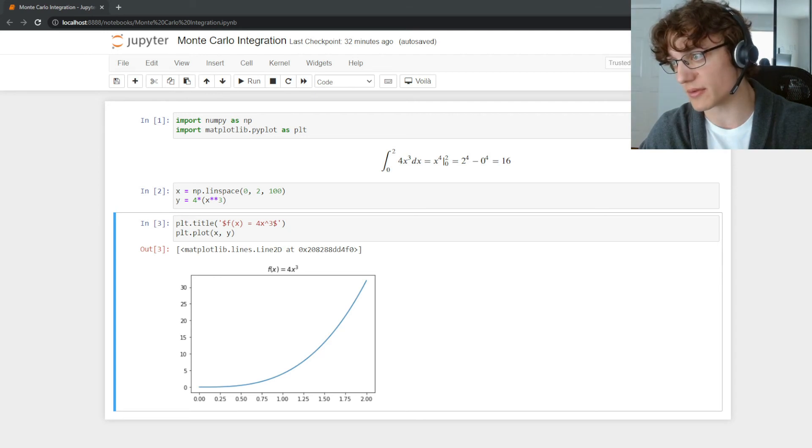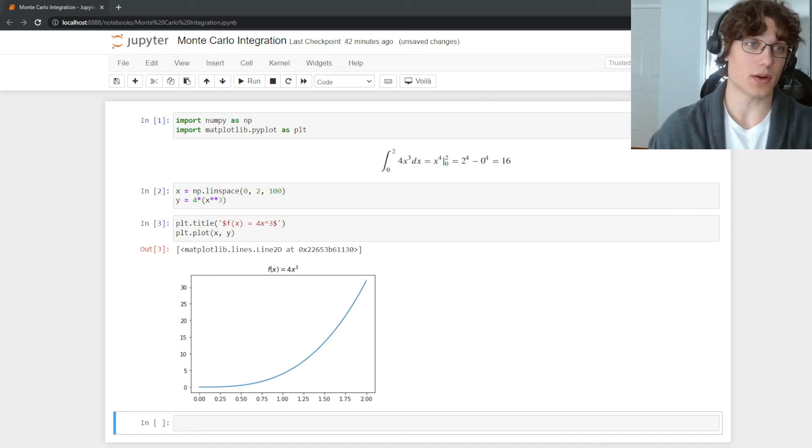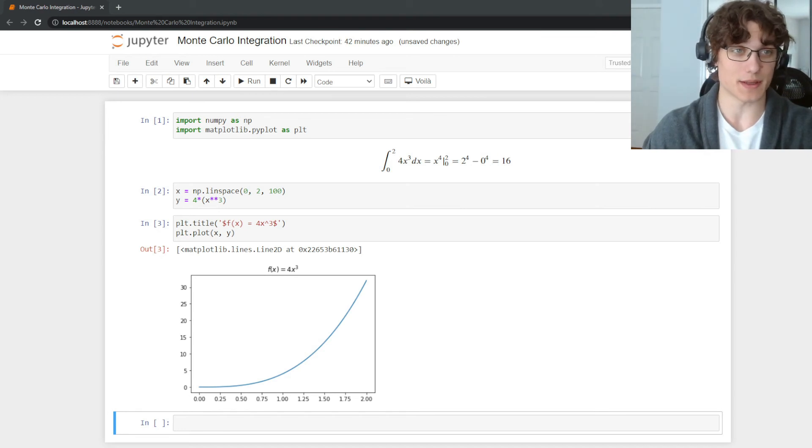I generated the function using matplotlib below and numpy. So I generate 100 points from 0 to 2 and then I am simply cubing each of those points and then multiplying them by 4 and I end up with this chart. The upshot of Monte Carlo integration and Monte Carlo simulation in general is that it is actually really easy to implement via code.